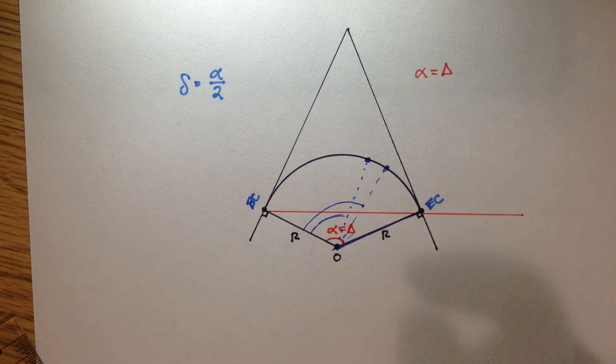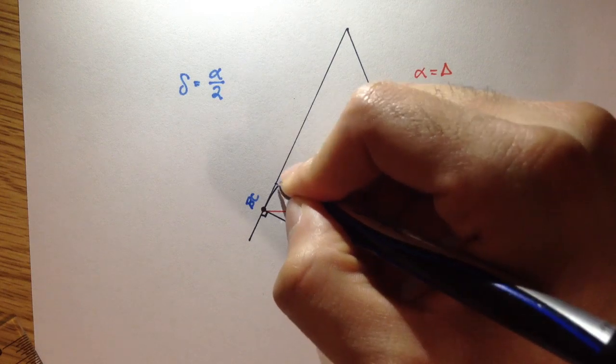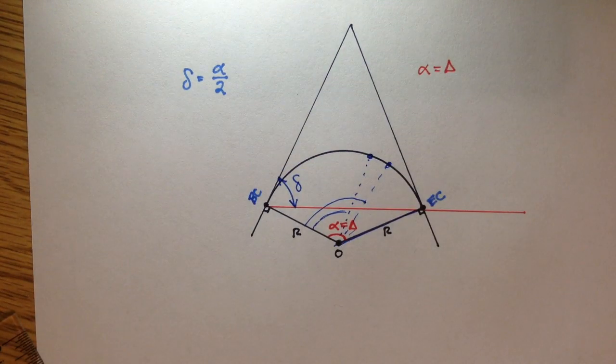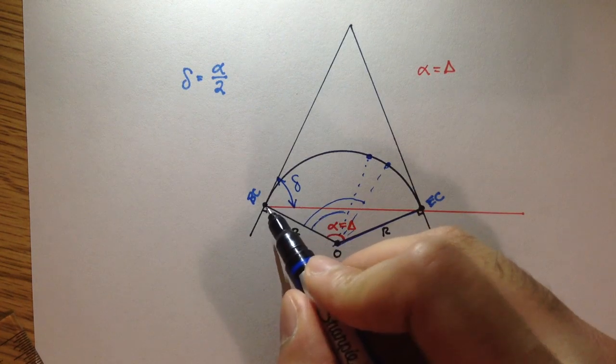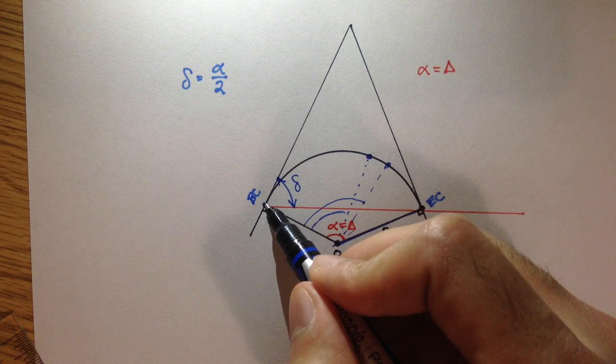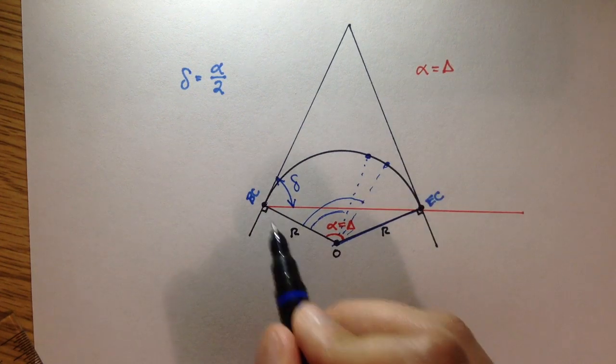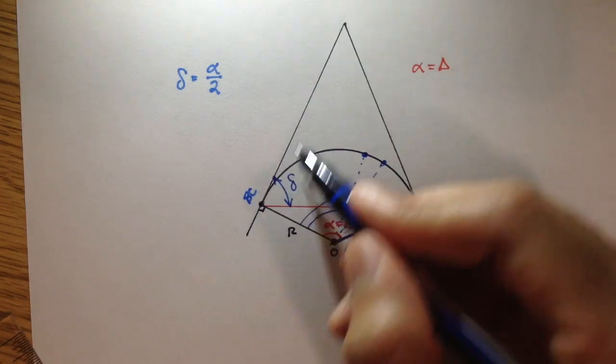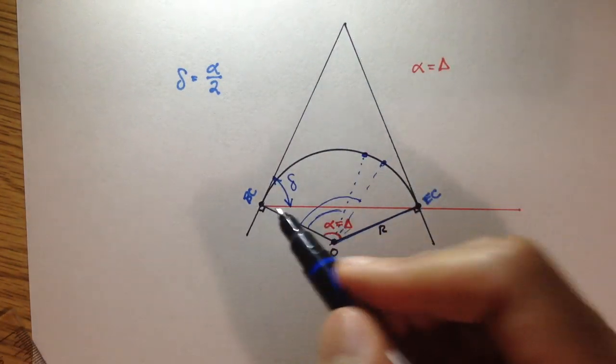So the deflection angle is this angle right here, and I'm going to call that little delta. Now, since the tangent lines are obviously tangent to this circle, and this orange line here is actually the base of this bigger triangle over here...